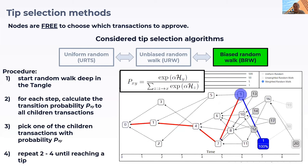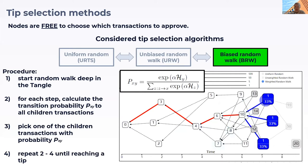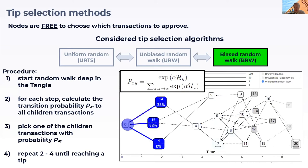We want to penalize this behavior, and you can do this by biasing the random walk such that the walk moves more towards transactions that have more proof of work on top of them.